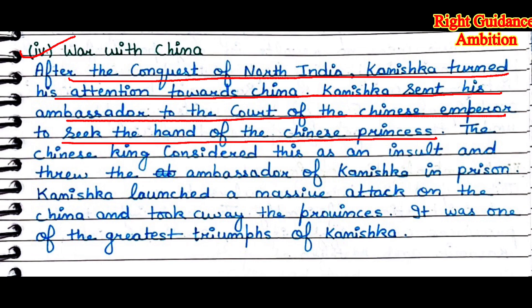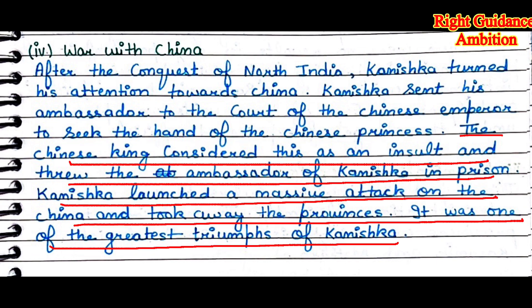The fourth point is the war with China. After the conquest of North India, Kanishka turned his attention towards China. He sent his ambassadors to the court of the Chinese emperor to seek the hand of the Chinese princess. The Chinese king considered this an insult and threw the ambassador in prison. In response, Kanishka launched a massive attack on China and took away many provinces — this was considered one of his greatest victories.